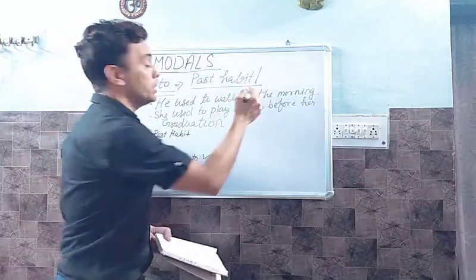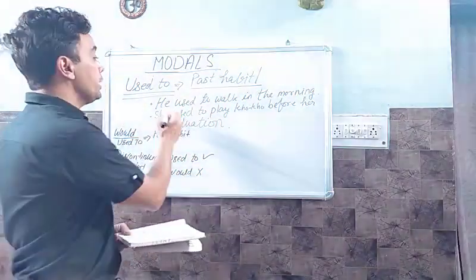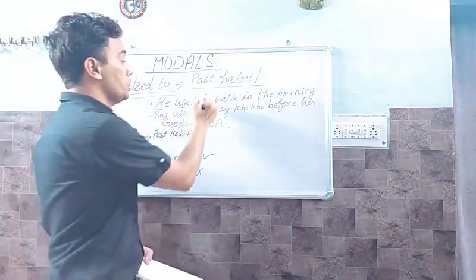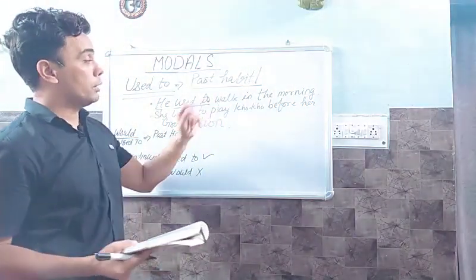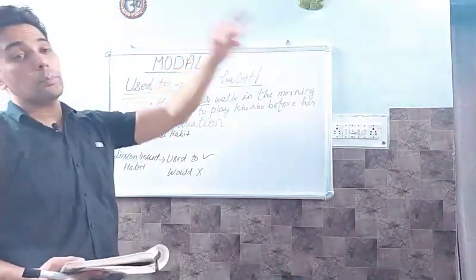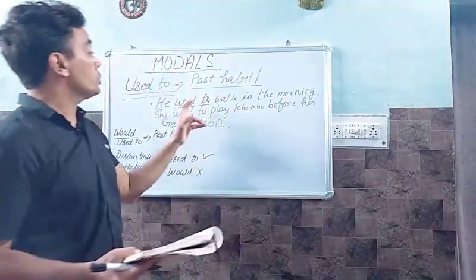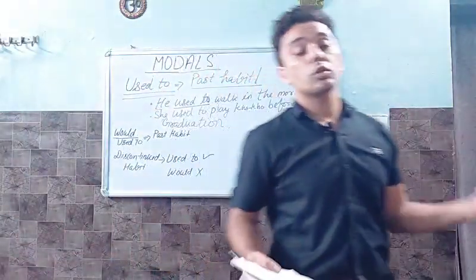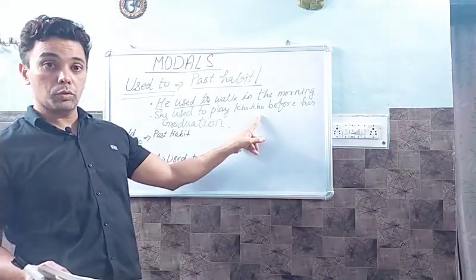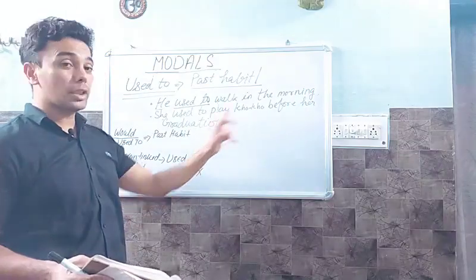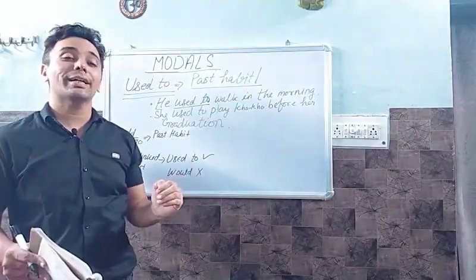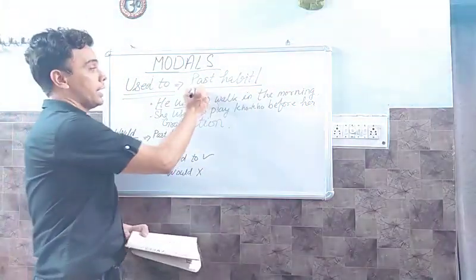For example, past habit — 'He used to walk in the morning.' This sentence shows past habit. We use the first form of the verb. 'I used to walk in the morning, but now I don't go.' Another example: 'She used to play Koko before her graduation.' Now her graduation is completed and she does not play Koko anymore. We are talking about past habit, not the present.